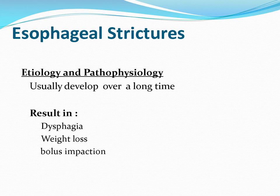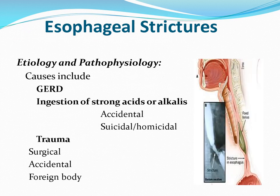Esophageal stricture can be congenital, presenting immediately after birth, causing dysphagia, weight loss, and bolus infection. In acquired form, GERD is the main cause — recurrent reflux causes stricture at the lower end of the esophagus. Other causes include trauma, accidental injury while removing a foreign body, or chemical ingestion — suicidal or homicidal — with alkalis and acids.